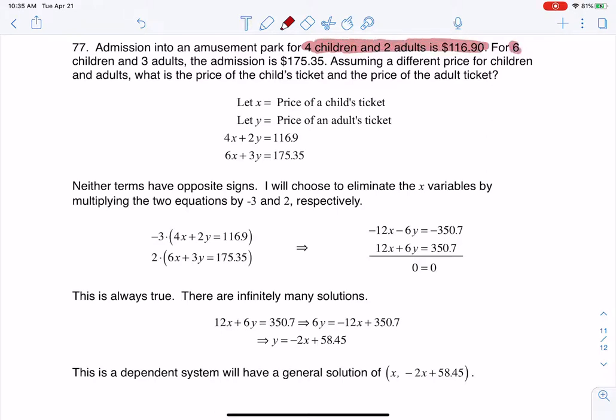We see that four kids and two adults total out to $116.90, but if you have six kids and three adults, it's a little bit higher, which it should be with more folks going. It's $175.35, and ultimately they want us to figure out the price of a child's ticket and the price of an adult ticket.